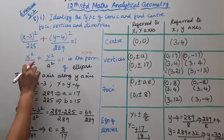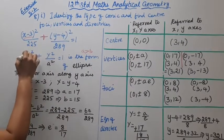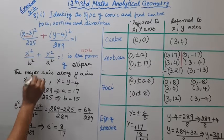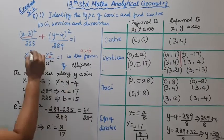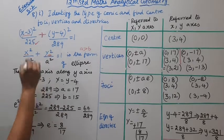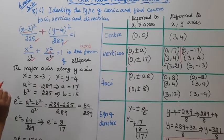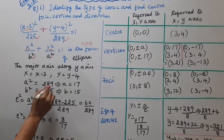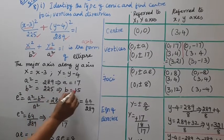So x-3 corresponds to x, y-4 corresponds to y, b² = 225, a² = 289. Therefore a² = 289, a = 17, b² = 225, b = 15.